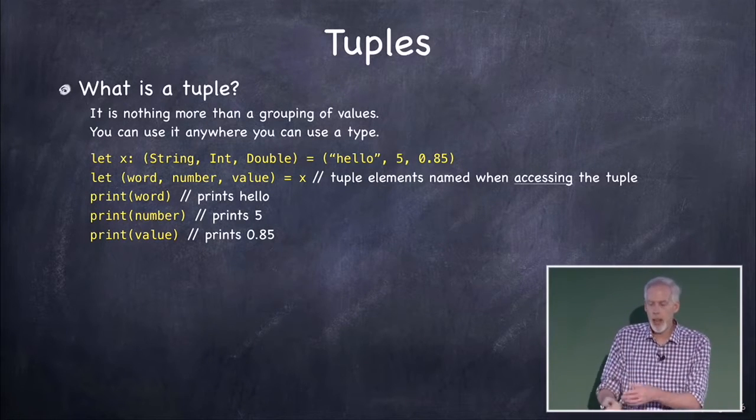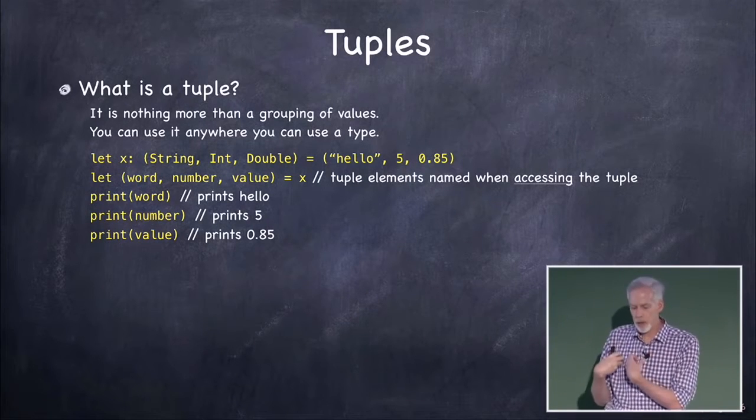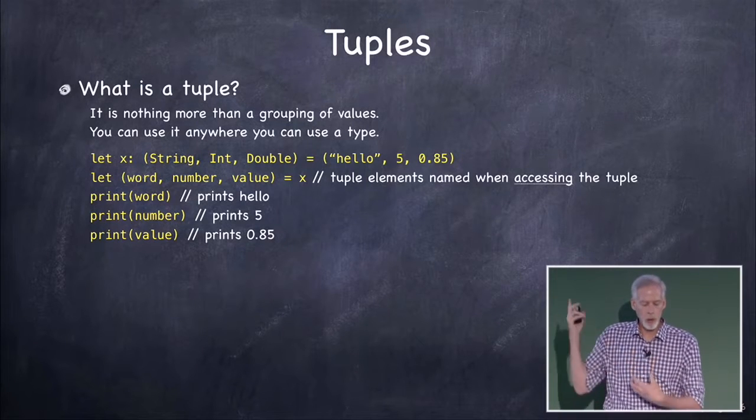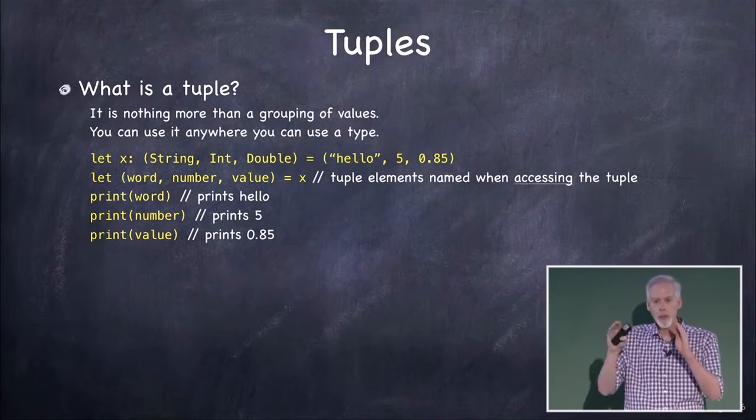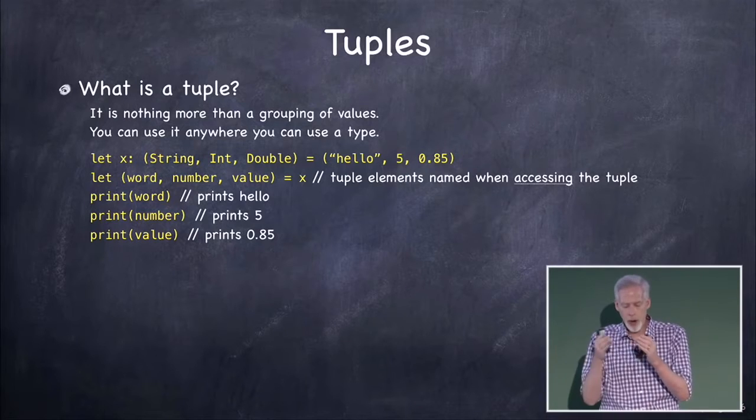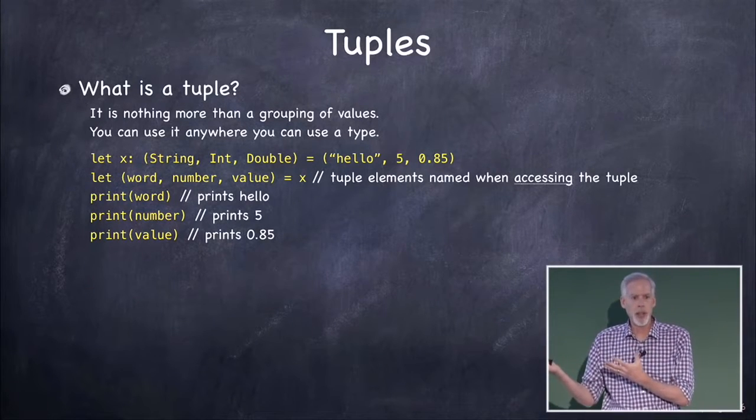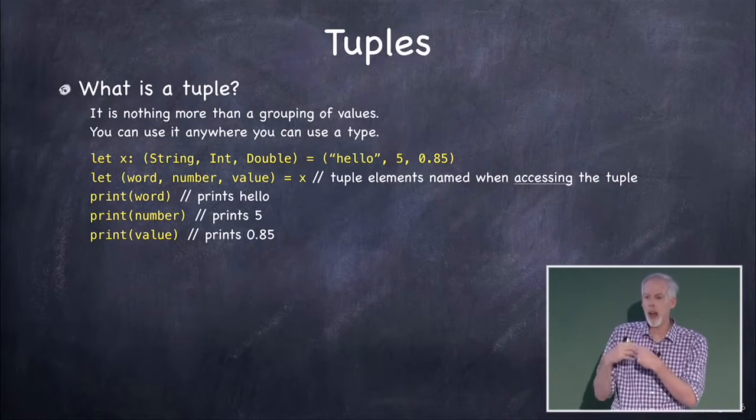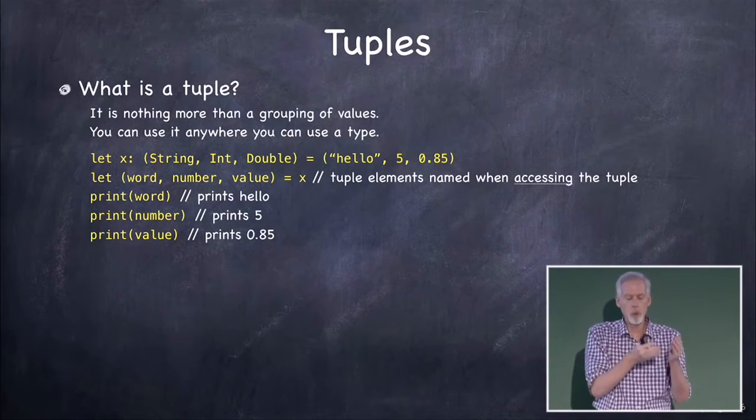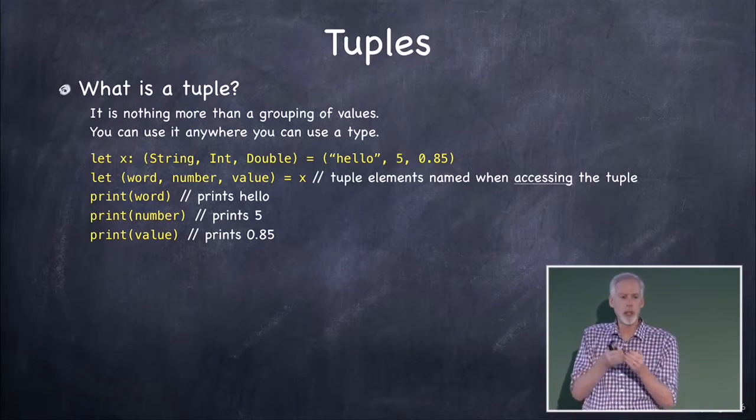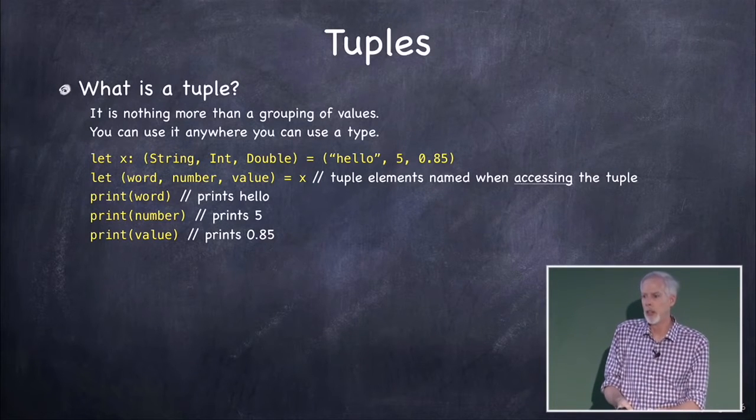Now, how do I get those values out of the tuple? Well, there's two ways to do it. One is to say let and then three identifiers, these are basically three local variable names, equals x. And that's gonna extract the three values and put them, assign them to word, number, and value, which are gonna be local variables in this context.